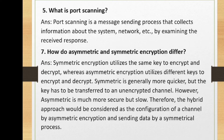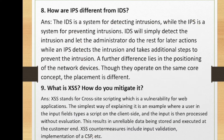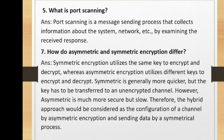How do asymmetric and symmetric encryption differ? This is a very important question for a network engineer, network analyst, or security analyst. Symmetric encryption utilizes the same key to encrypt and decrypt, whereas asymmetric encryption utilizes different keys. Symmetric is generally quicker but the key has to be transferred through an unencrypted channel. Asymmetric is much more secure but slow. Therefore, a hybrid approach would be considered — configuring a channel by asymmetric encryption and sending data by a symmetric process.